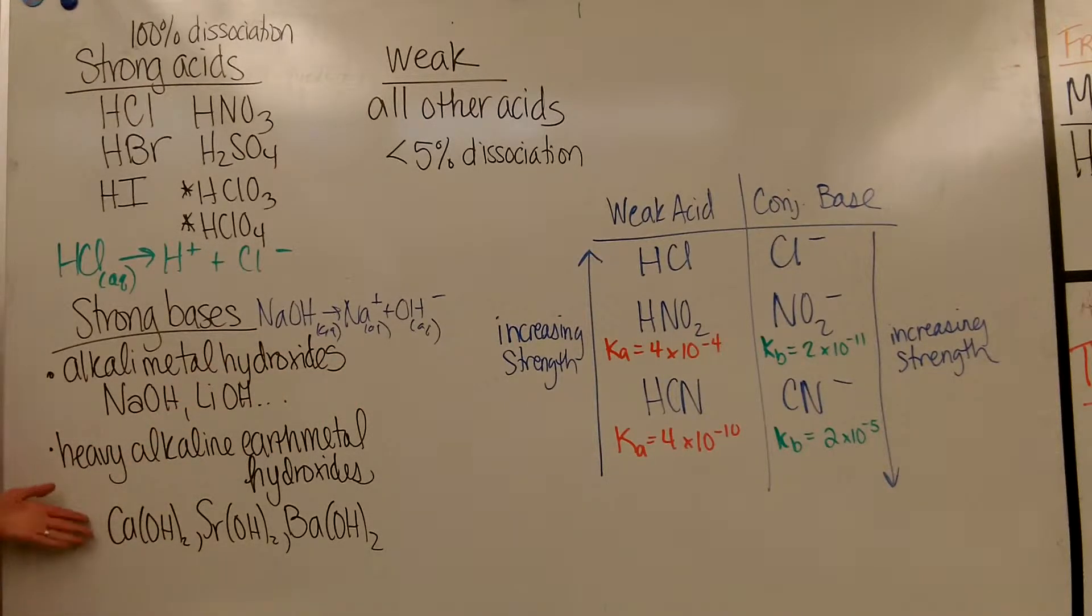The other example would be your alkaline earth metal hydroxides. So these are your heavy alkaline earth metals, meaning leaving out magnesium. So it's calcium hydroxide, strontium hydroxide, barium hydroxide. These also count as strong bases. They might not have the best solubility, so these might not be very soluble, but the parts of them that do dissolve will totally break up into ions.